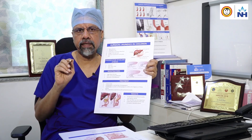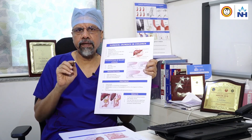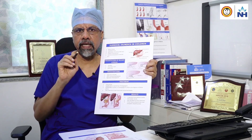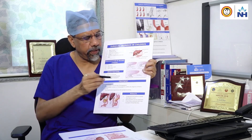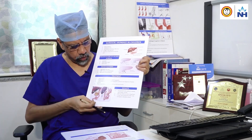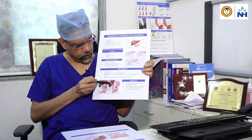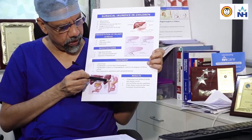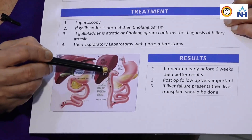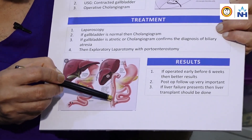If it is biliary atresia, we proceed with exploratory laparotomy and portoenterostomy. We excise all the atretic duct and join the porta — the portal plate where the bile duct should be — with the small bowel. The porta is sutured with the small bowel using a Roux-en-Y loop: the bowel loop is disconnected, brought up, and sutured so that bile goes directly from the liver into the small bowel.